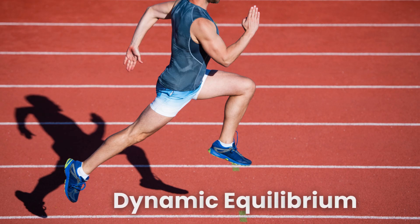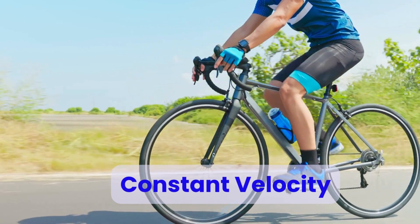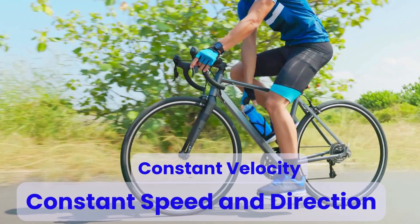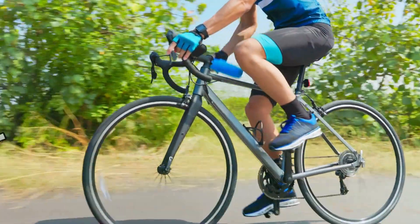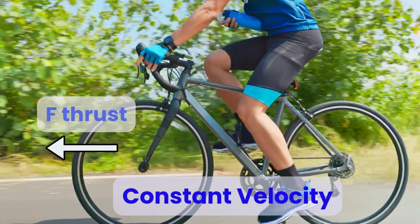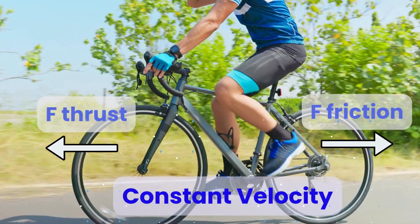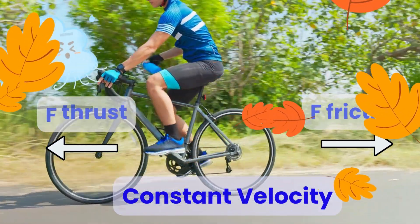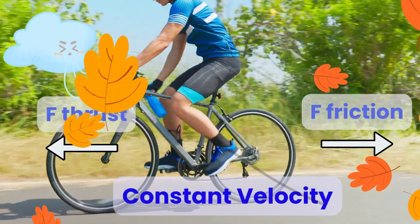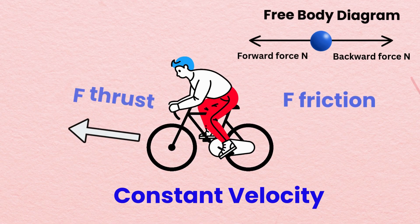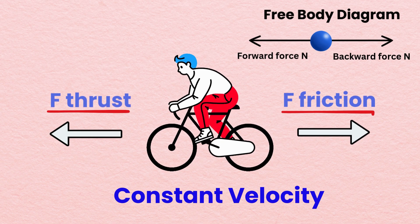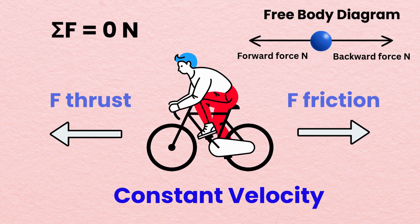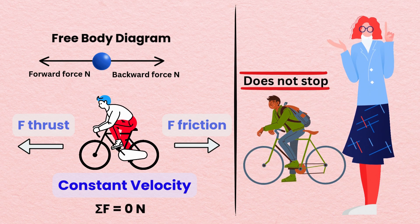Dynamic Equilibrium. As Isaac is biking at a constant velocity — constant speed on a straight level road — the bike exerts a forward thrust force. The friction from the moving parts of the bike, the friction between the road and the tires, and the air resistance push him backwards. The forward force exactly balances the backward forces, so ΣF = 0 newtons. This does not mean Isaac comes to a standstill.